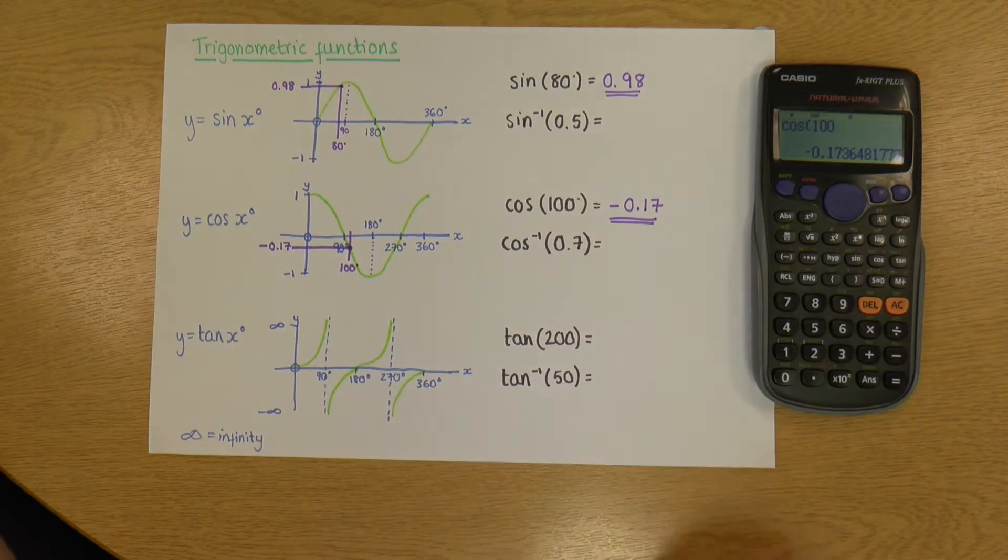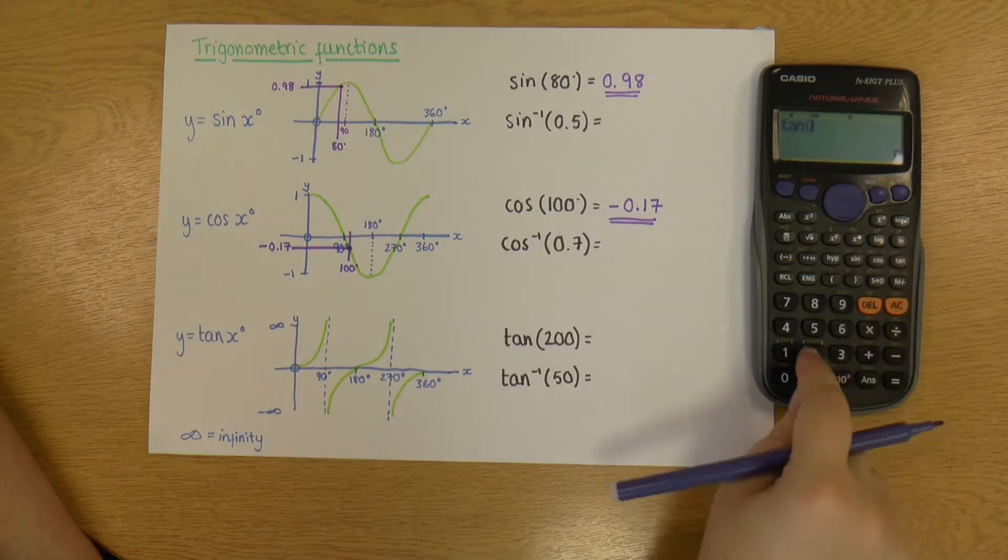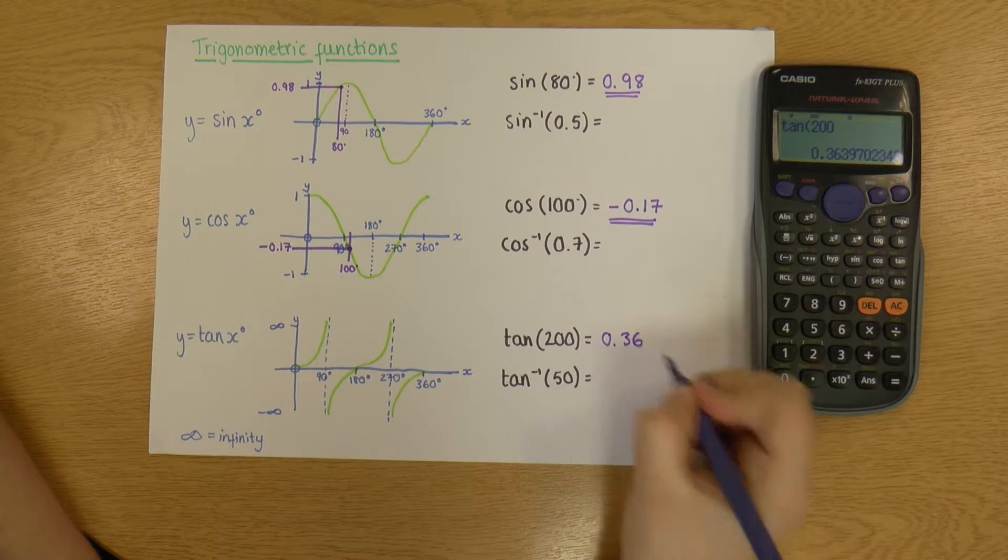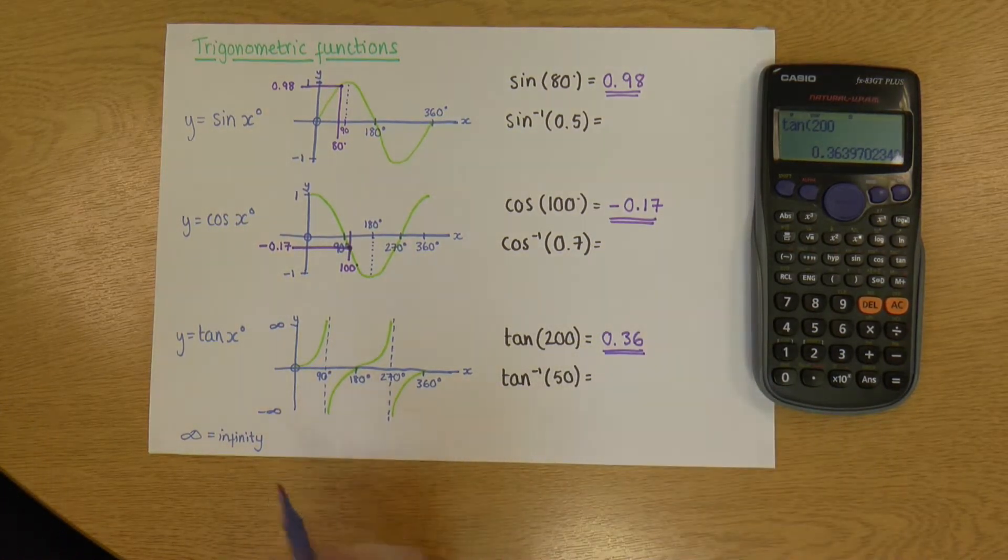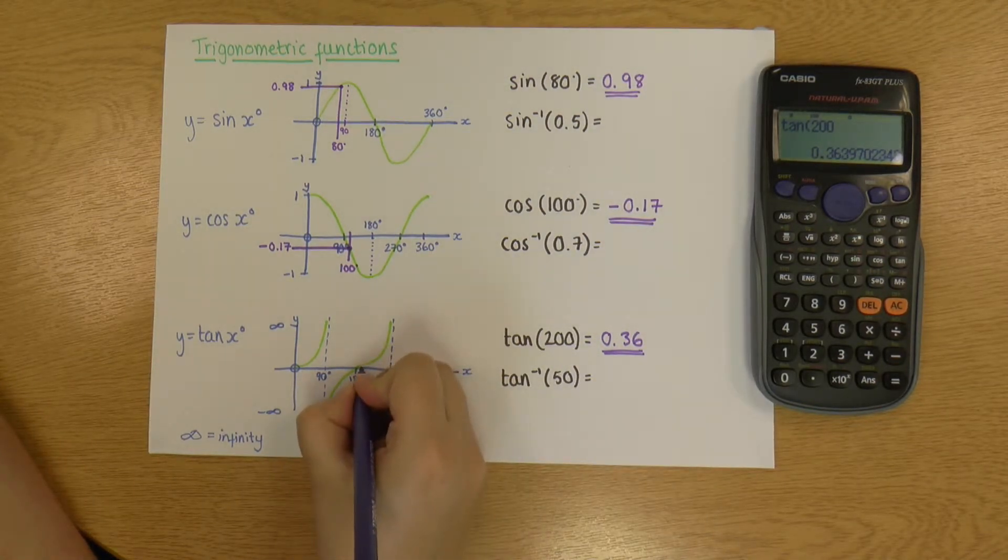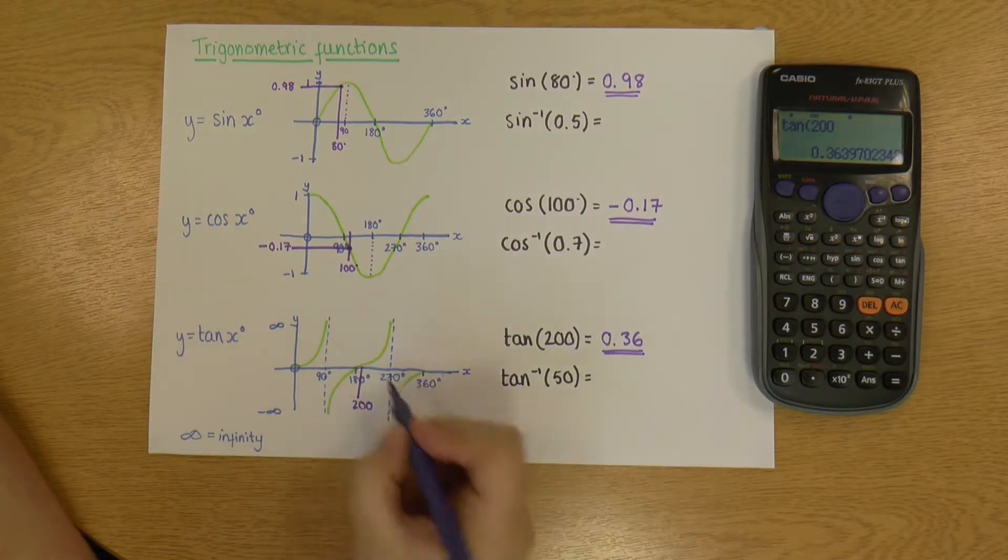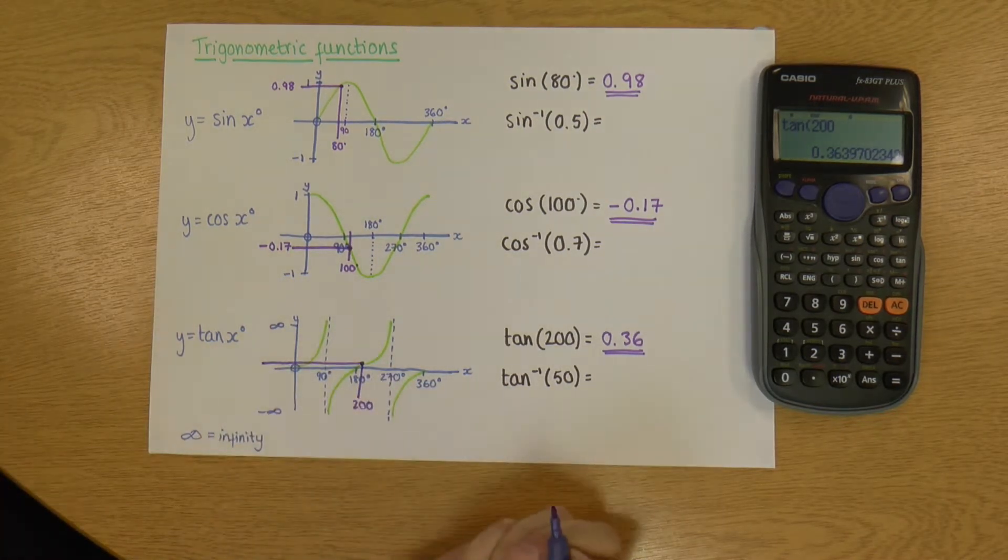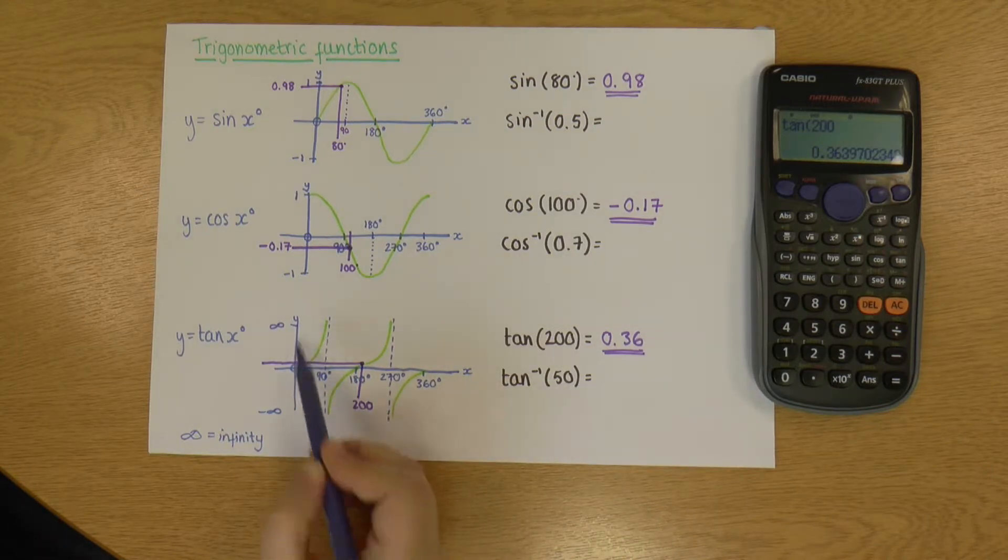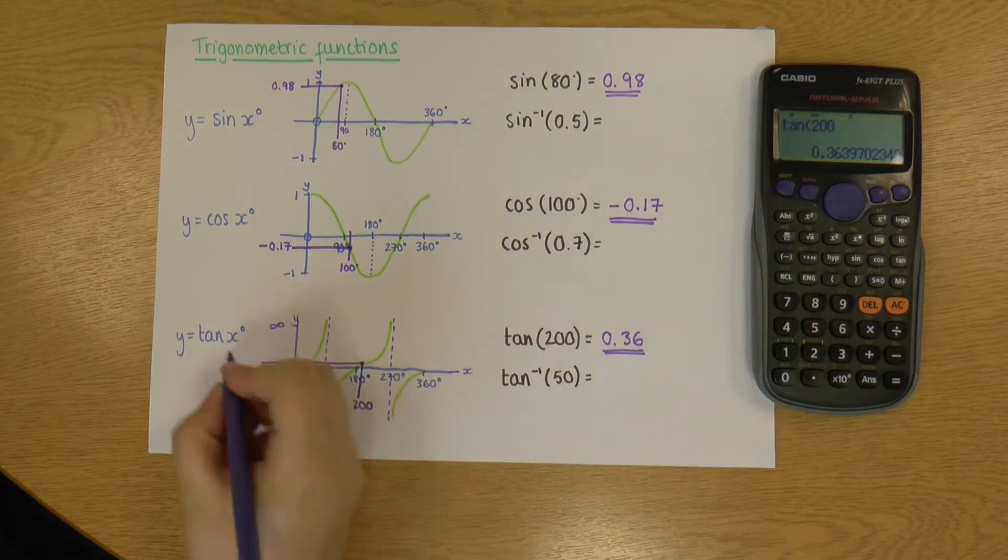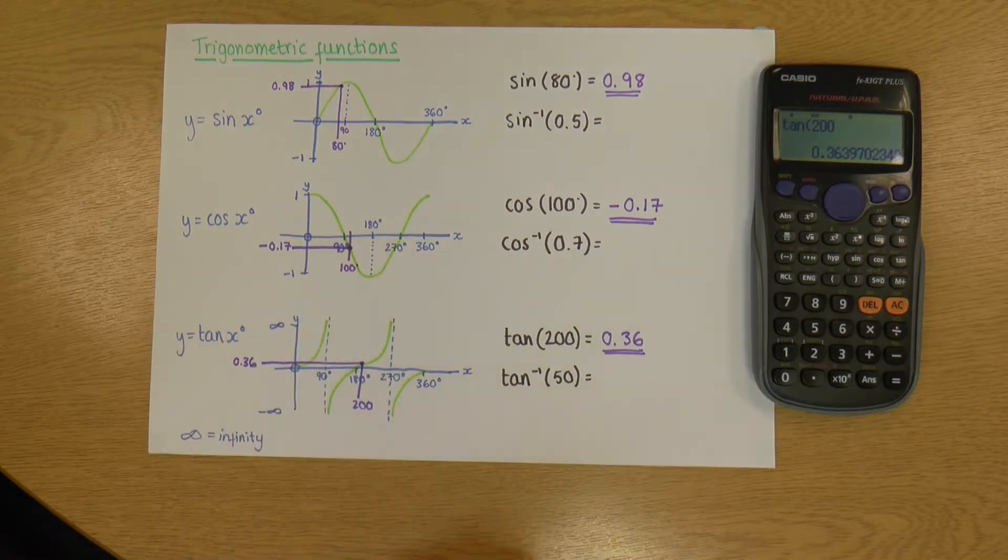And then our last one, tan 200. So pop it in the calculator. And that's given me a value 0.36. And showing that on a graph. So we're looking for 200 degrees on here, which is right here. So 200, which joins at about that point on the graph. Now, tan is awkward. Because these axes go up to infinity and minus infinity, we don't really get much of a sense of scale like we did with the previous two. But we can just write on there that it's at 0.36.